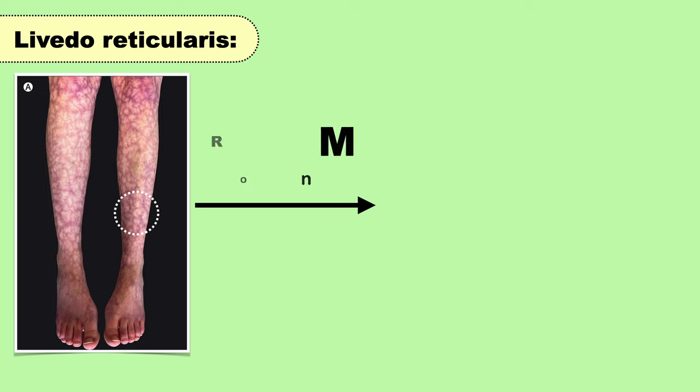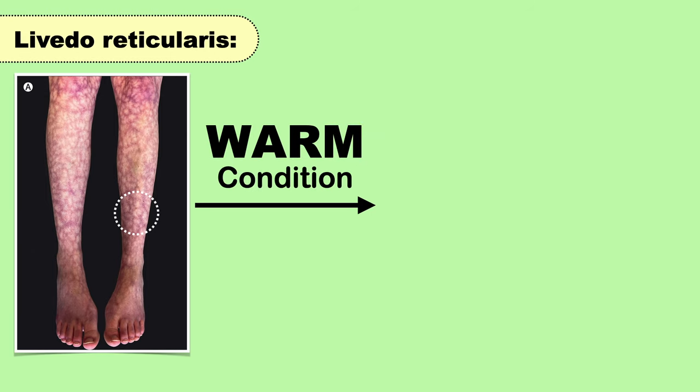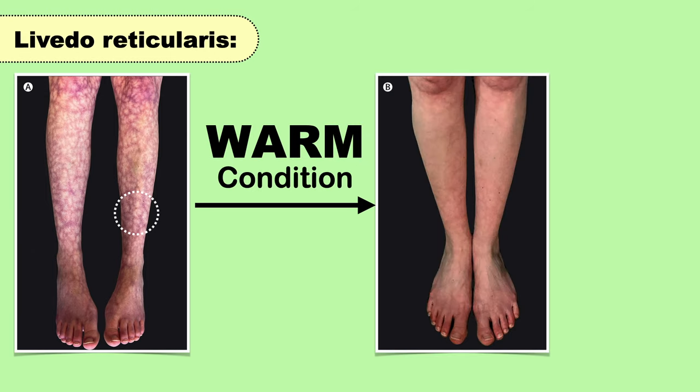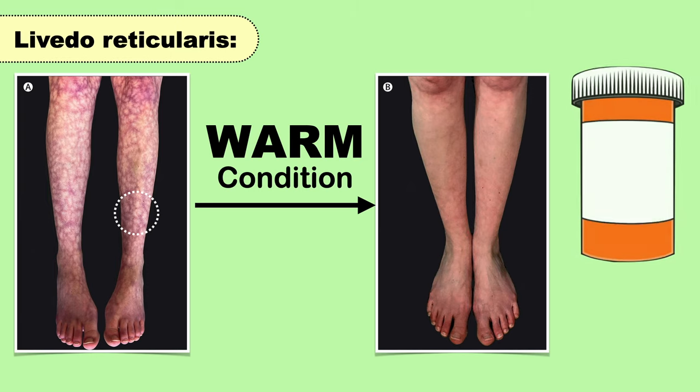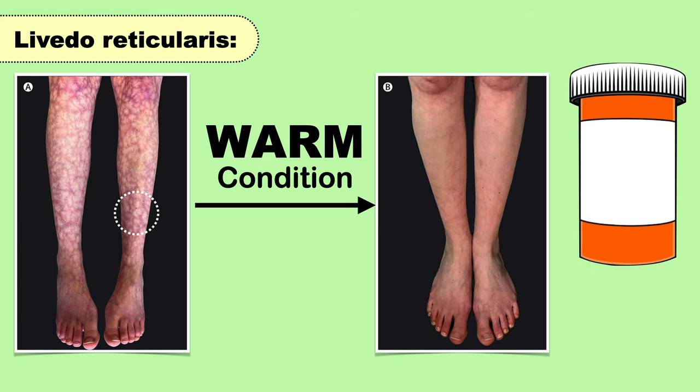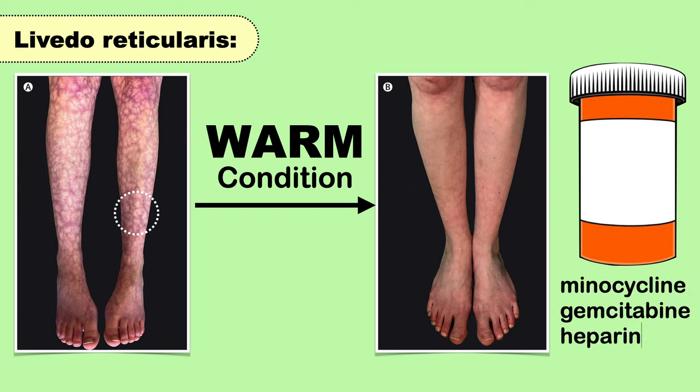The next important skin sign is livedo reticularis. Some people may have a blue or purple net-like pattern on the skin when they feel cold. When their skin warms up, this pattern disappears. It's also possible to see this pattern when taking certain medications like minocycline, gemcitabine, and heparin.